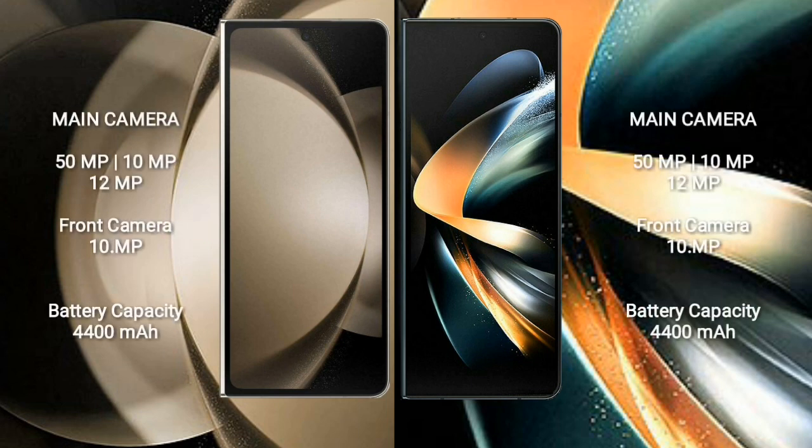Samsung Galaxy Z Fold 5 has a rear triple camera setup: 50MP + 10MP + 12MP, and a front camera of 10MP. Samsung Galaxy Z Fold 4 also has a rear triple camera setup: 50MP + 10MP + 12MP, and a front camera of 10MP. Samsung Galaxy Z Fold 5 has a 4,400mAh battery with 25W fast charging support.